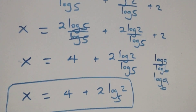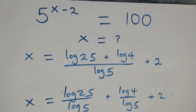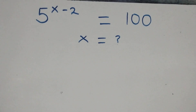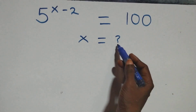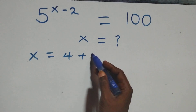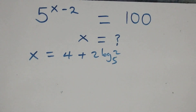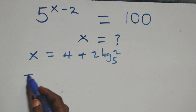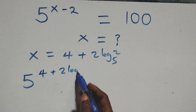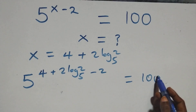Let's check if this satisfies the given problem. We substitute the value of x, which is x equals 4 plus 2 log 2 base 5. All we have becomes 5 raised to power 4 plus 2 log 2 base 5 minus 2 equals 100.